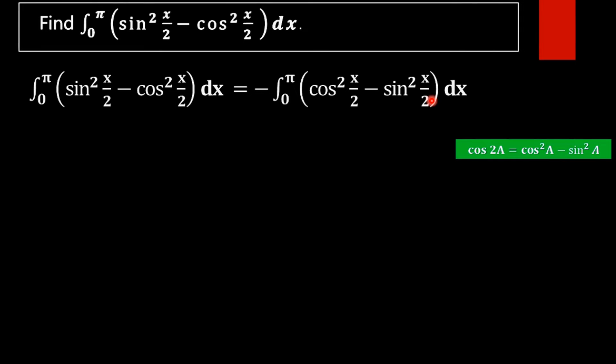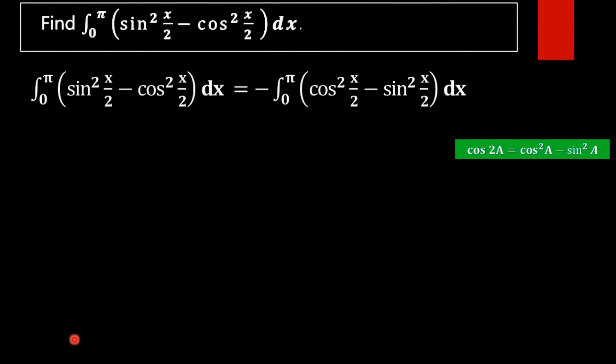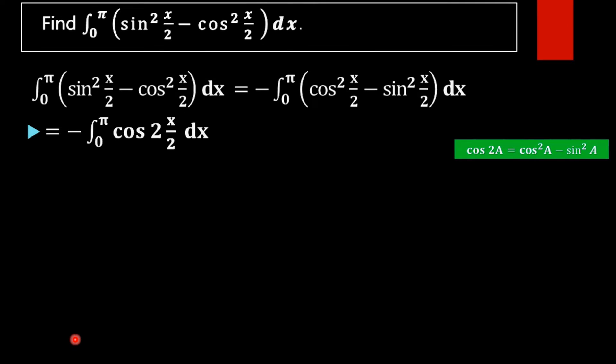So we had rewritten the function like this. Next, what is this? According to the identity, we can rewrite it as cos 2 into x by 2 dx.